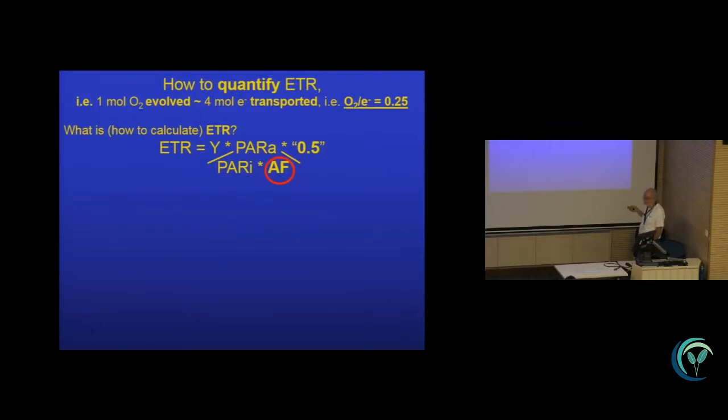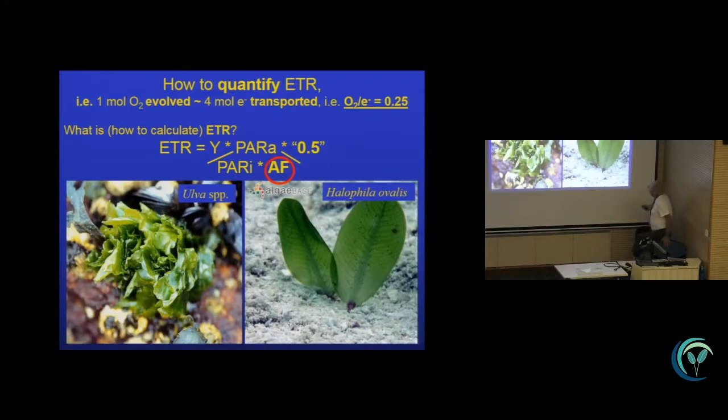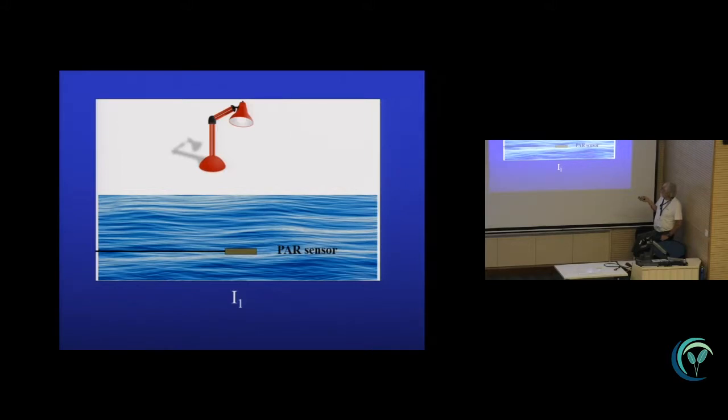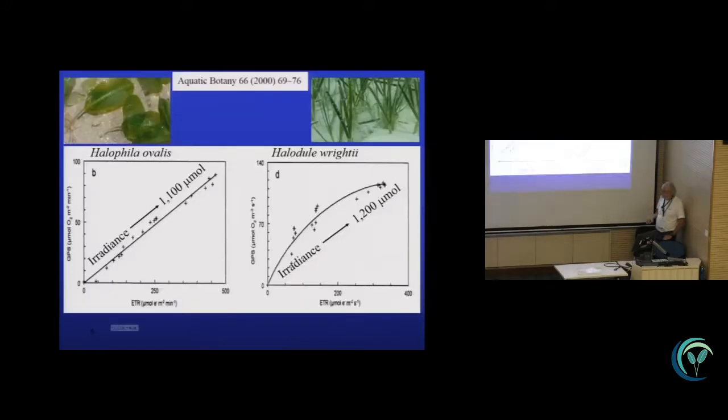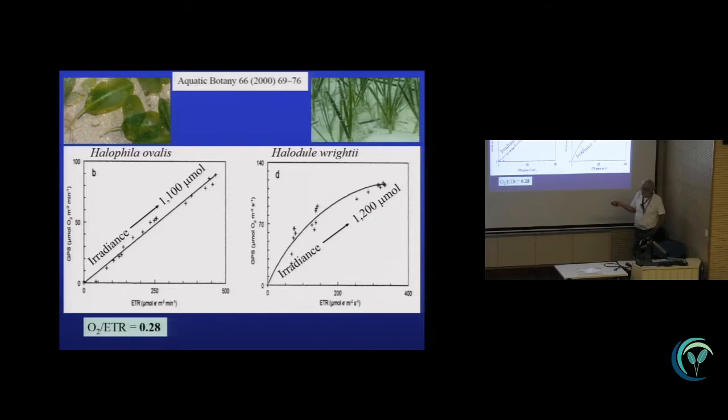Let's take the example of our favorite seagrass in this conference here, Halophila ovalis. You pick out a Halophila ovalis leaf from a typical meadow. First, you can measure the light with a light sensor slightly underwater in the petri dish or in the sea, and then you put the leaf on top of the light meter, and you calculate the absorption factor very simply by how much light was absorbed by this leaf. If you do that with Halophila ovalis, you actually get an oxygen-to-ETR ratio that's 0.28, and you get fairly linear response up to very high, up to half of full sunlight.